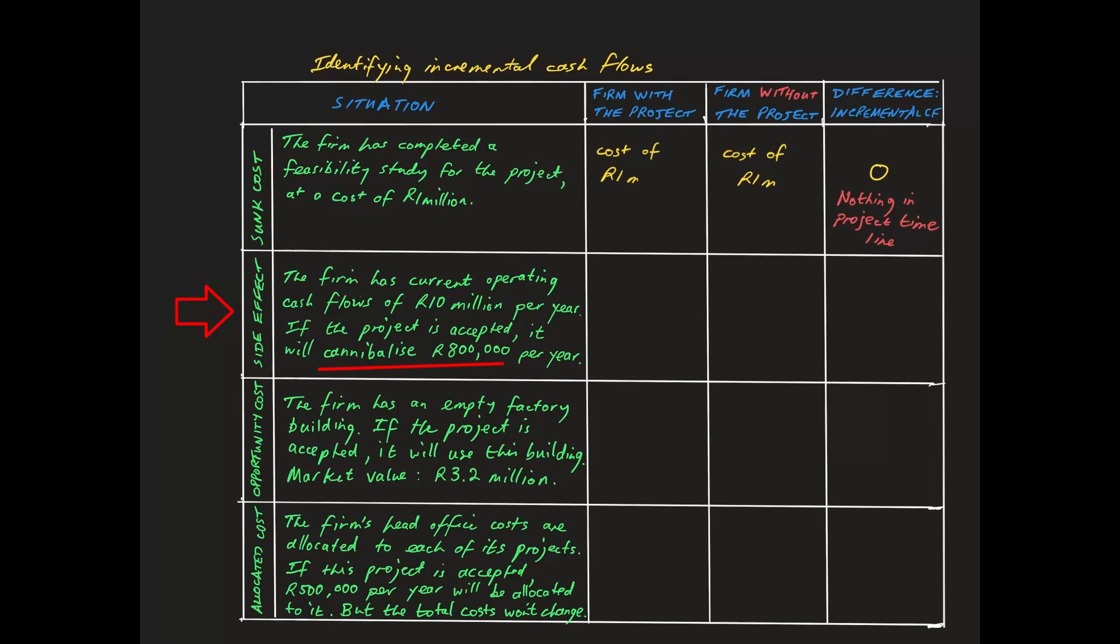Continuing with the same approach, we enter 9.2 million as the cash flow for the company with the project. Without the project, there will be no lost sales, and therefore the number here is 10 million. This makes a difference of negative 800,000, which is the relevant amount for each year in the capital budgeting timeline.